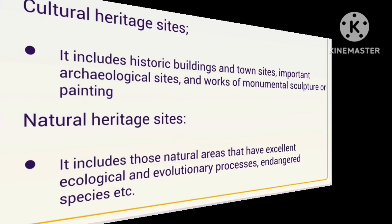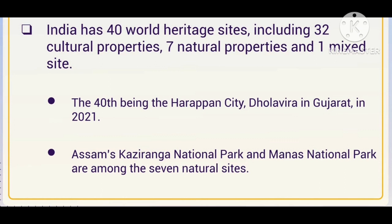India has 40 UNESCO World Heritage Sites, of which 32 are cultural properties, 7 are natural properties featuring special flora, fauna, or bird species, and 1 is a mixed site. Mixed heritage sites have both a particular kind of unique species and also cultural significance such as tribal settlements or historical ties.